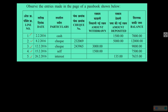These are dates given in the month of February. The particulars column shows: Cash, Cheque, Cheque, Self, Interest. The cheque number column is shown, though not all columns are filled. Here is the withdrawn amount, here the amount deposited, and here the balance. I will explain what each entry means.